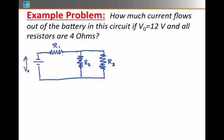Let's work on another example where we ask how much current flows out of a battery if, in this circuit, the battery voltage V0 is 12 volts and all the resistors shown have a value of 4 ohms.